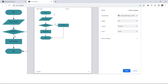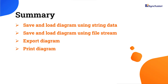Refer to the documentation link in the description for more details on exporting and printing diagrams. In this video, you have seen how to save and load the diagram component as a string and a file stream. You have also seen how to export the diagram in different file formats. You can download a working example from the GitHub link in the description. I've also included a link where you can see if you're eligible for our community license, which will provide you with a free license key. Thank you for watching. If you found this video useful, give it a like and subscribe to our channel.